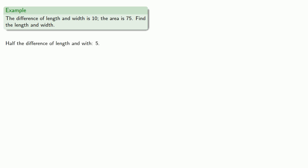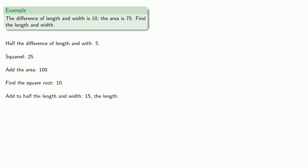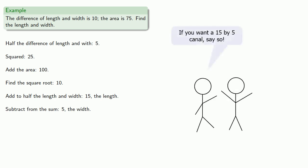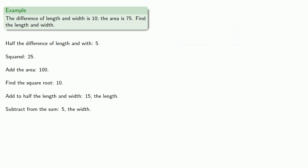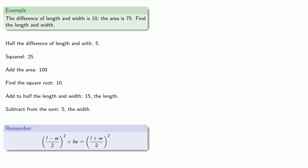We find half the difference of length and width — that's 5. We square it — that's 25. We add the area to get 100. Find the square root: 10. So we add this result to half the sum to get 15, the length, and subtract to find 5, the width. From our modern algebraic perspective, it's useful to remember this relationship: half the difference squared plus the area is half the sum squared.